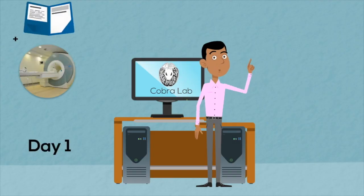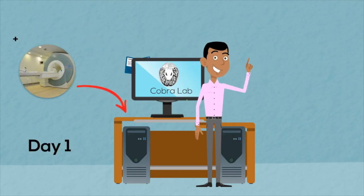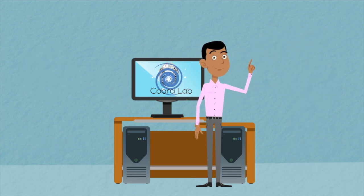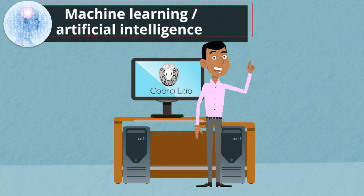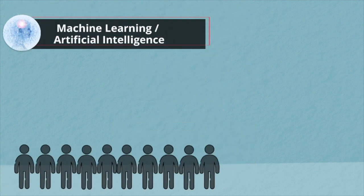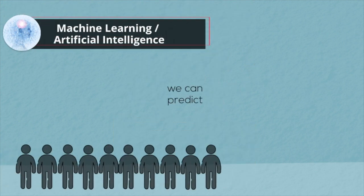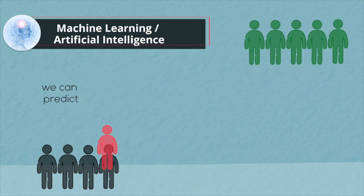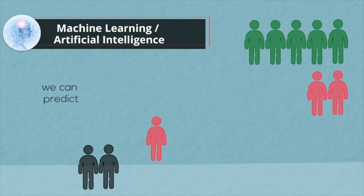This brings me to the main technical contribution of this paper. We propose a machine learning model that can combine information from risk factors, clinical assessments, and MR images from two visits. We validated our model on multiple datasets and symptom domains, and the results are promising with accuracy around 90%.